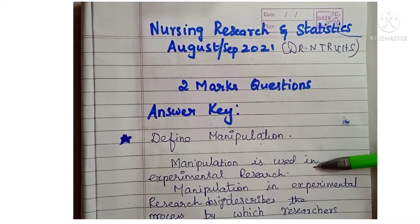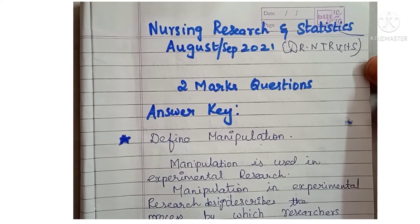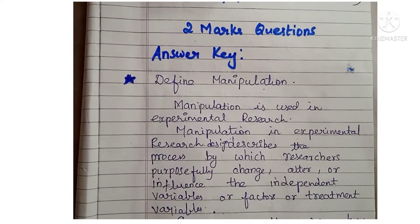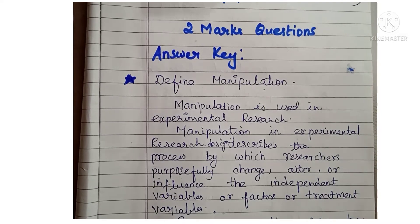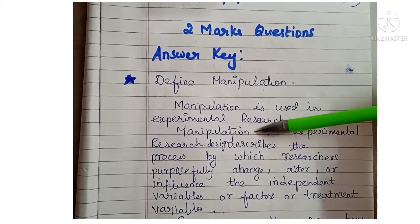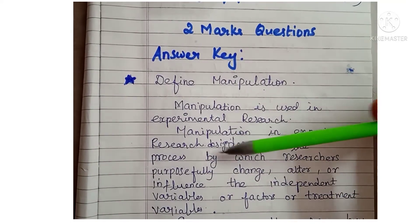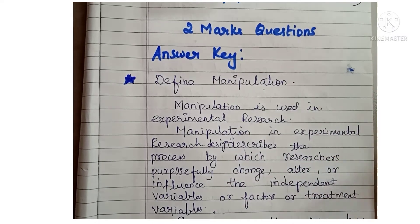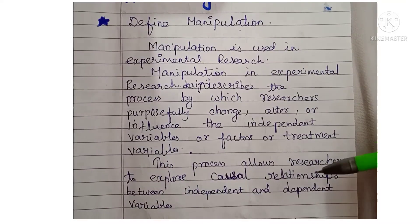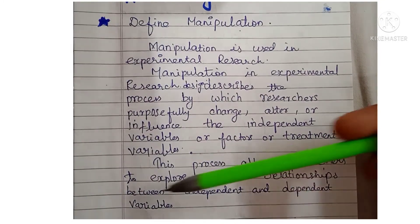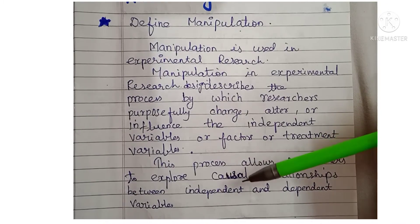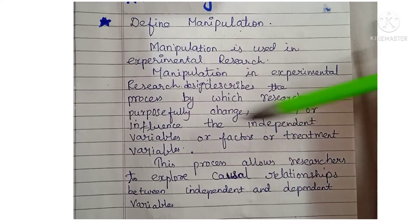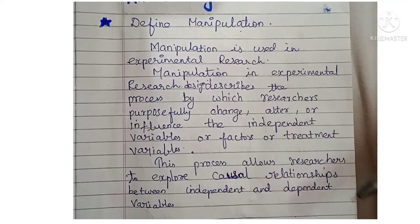Define Manipulation: Manipulation is used in experimental research. Manipulation in experimental research design describes the process by which the researcher purposefully changes, alters, or influences the independent variables — also called factor or treatment variables. This manipulation process allows researchers to explore causal relationships, that is, cause-and-effect relationships, between independent variables and dependent variables.